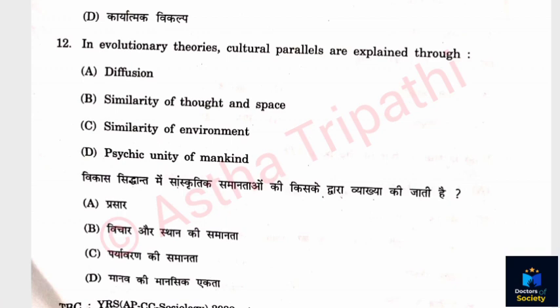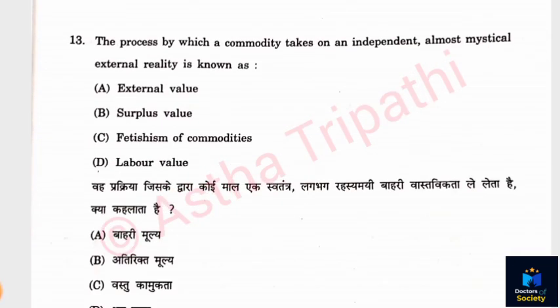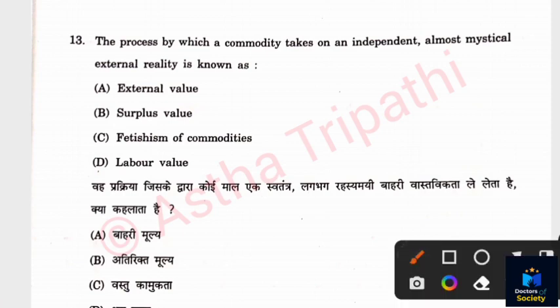Question 12: In evolutionary theories, cultural parallels are explained through which of the following? Options: Diffusion, Similarity of thought and space, Similarity of environment, Psychic Unity of Mankind. The answer is D — Psychic Unity of Mankind. Question 13: The process by which a commodity takes on an independent, almost mystical, external reality is known as what? Options: External Value, Surplus Value, Fetishism of Commodities, Labor Value. The answer is C — Fetishism of Commodities.